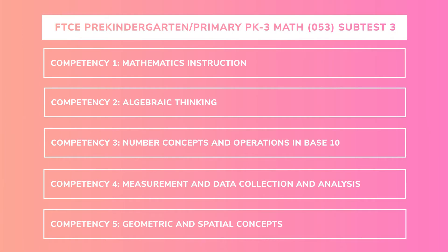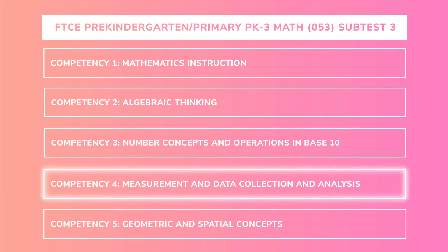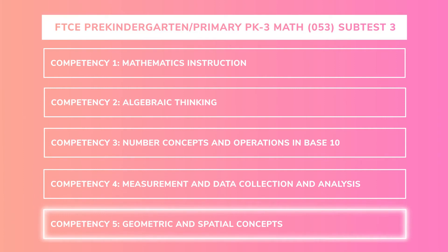The FTCE Pre-K 3 mathematics subtest consists of five competencies. You'll need to have knowledge of mathematics instruction, algebraic thinking, number concepts and operations, measurement and data, and geometric and spatial concepts. Each competency is worth between 15 and 30 percent of your exam. We'll discuss some of the most important things to know with each competency.